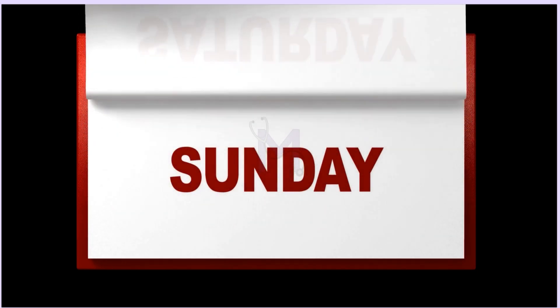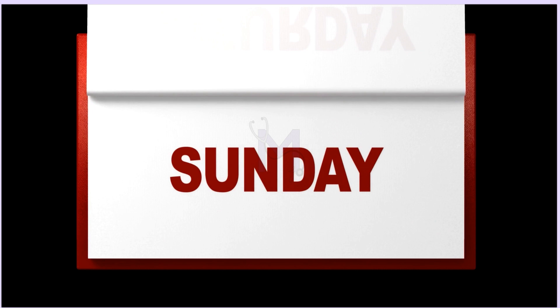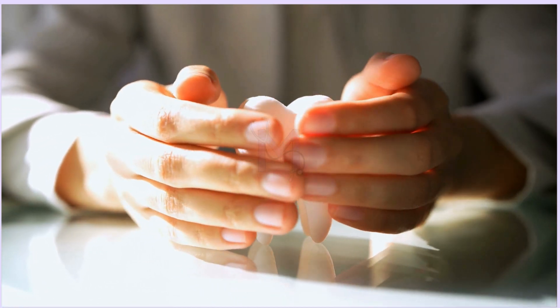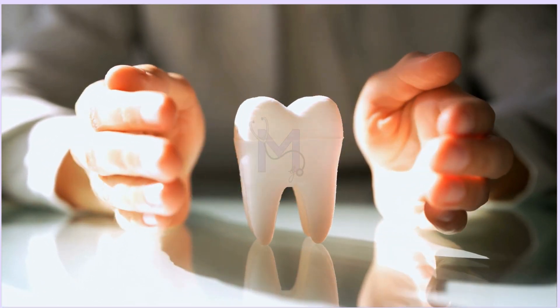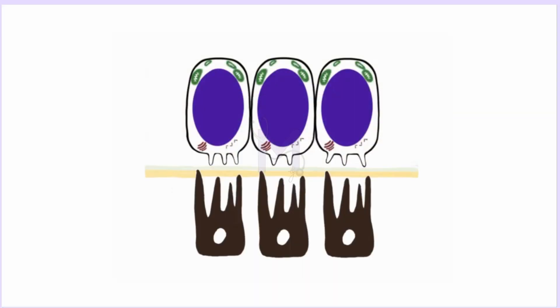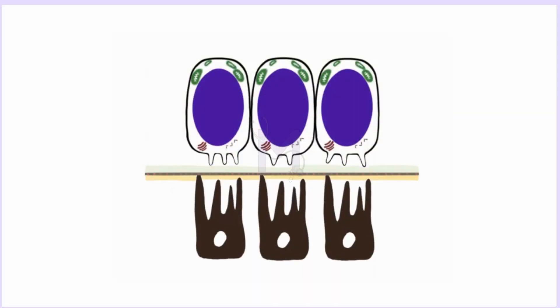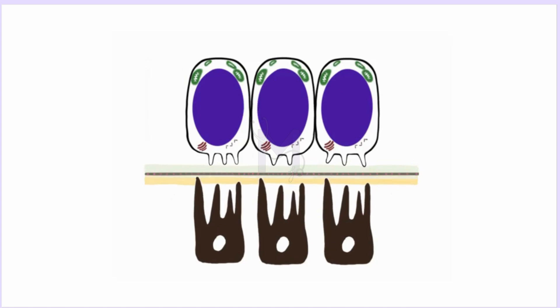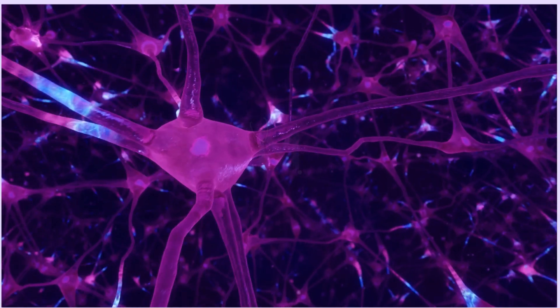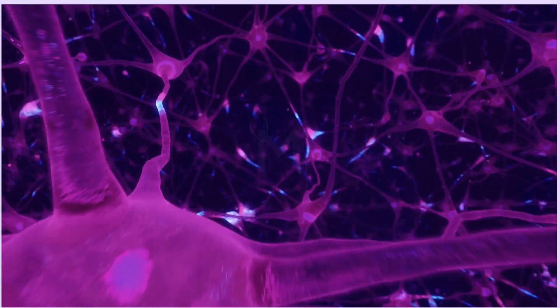Formation of the components of our teeth takes place as a series of planned events. Amelogenesis is the formation of enamel of teeth after the first layer of dentine has been laid down during dentinogenesis. The biological concept of reciprocal induction governs these stages of tooth development, where the differentiating ameloblasts and odontoblasts receive signals from each other for the process to continue.